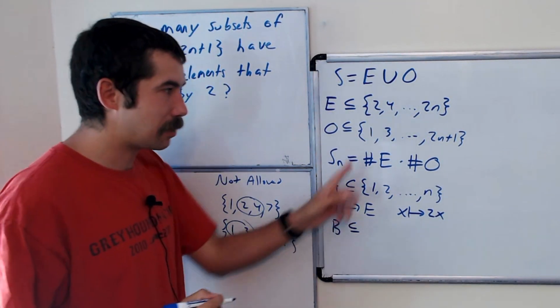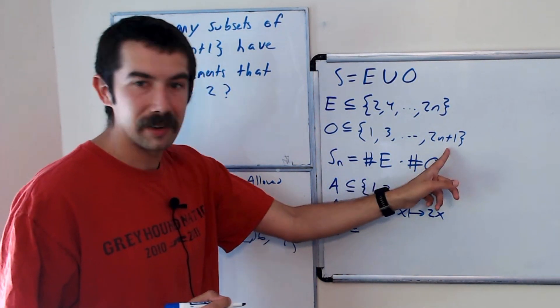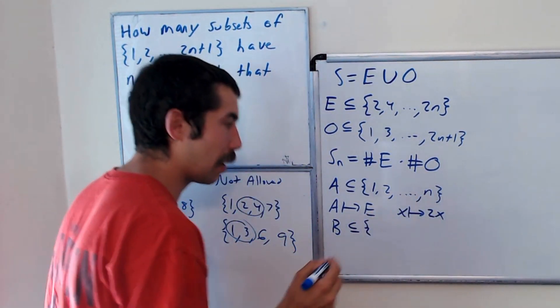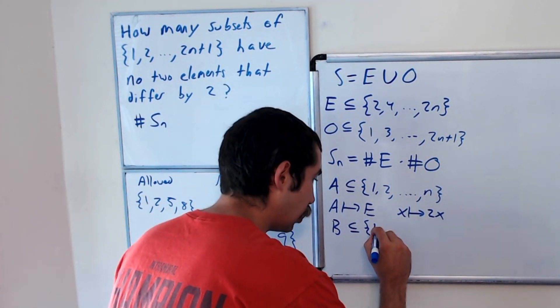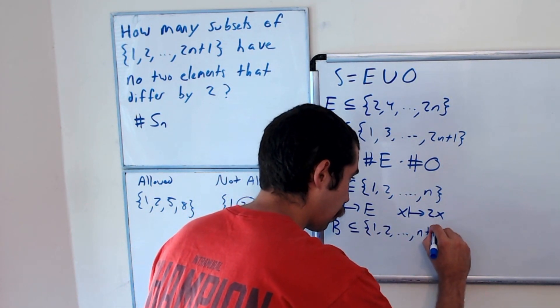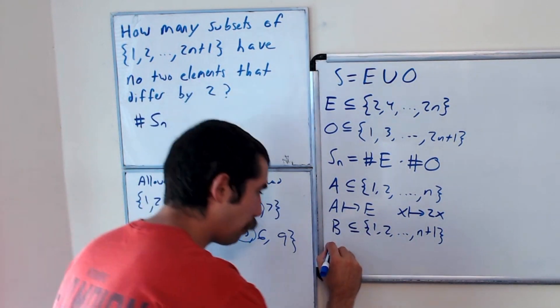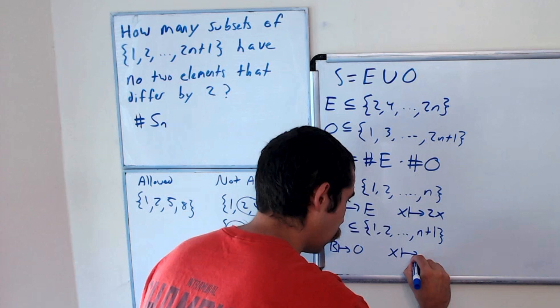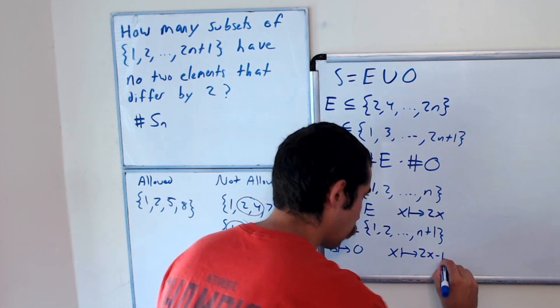And then similarly, we'll let B be a subset. How big is this set here? Here it's 2N plus 1. So B will be a subset of N plus 1. And the way we'll map B back to odd is we'll take X and we'll map it to 2X minus 1.